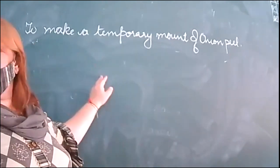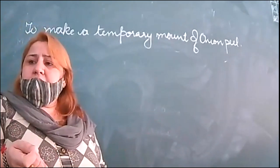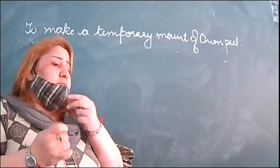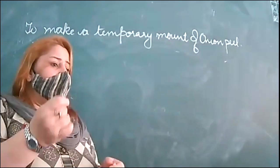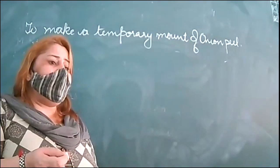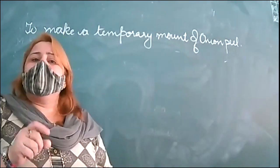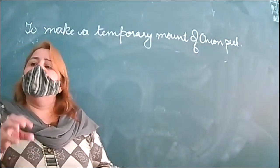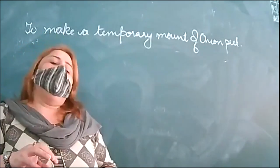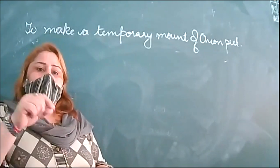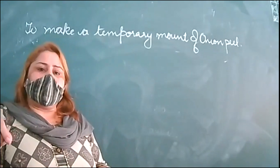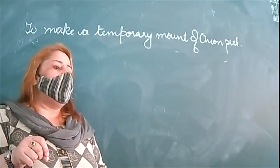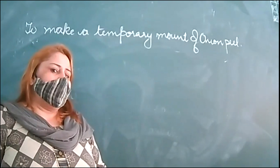Now what is the procedure? Take an onion and remove a layer from it. Put it on the petri dish which has water in it. Then keep it on the slide.